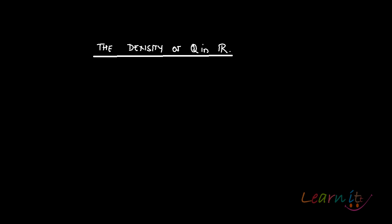In this video we will talk about why we call Q, the set of rational numbers, dense in R. The density of Q in R actually means that R is a closure of Q, in the sense that R is a set of all limits of rational numbers. So what happens is that the limit of sequences of rational numbers would move to R — that's what it essentially means.